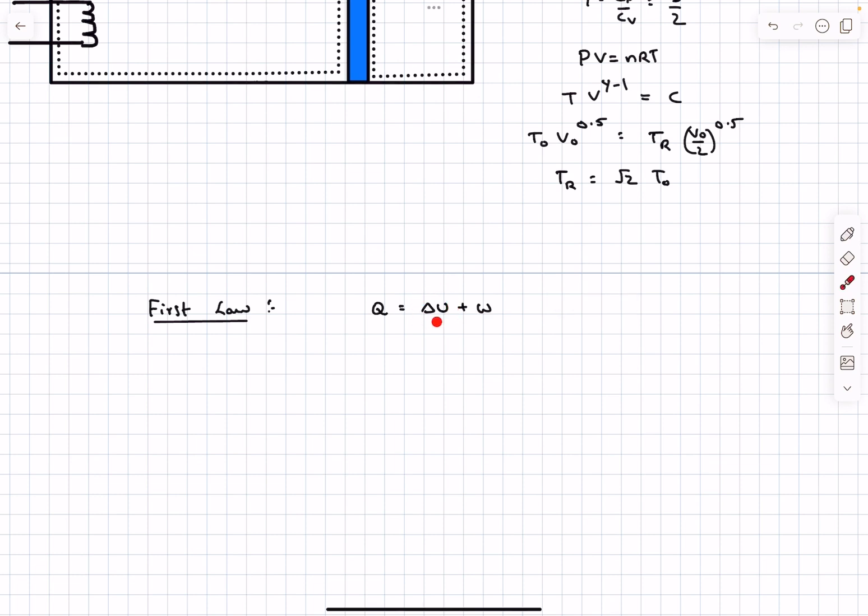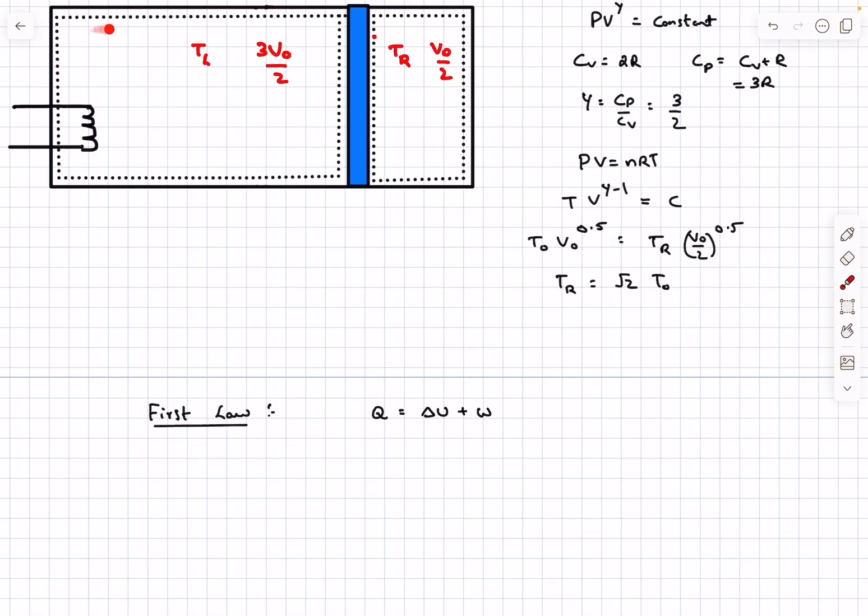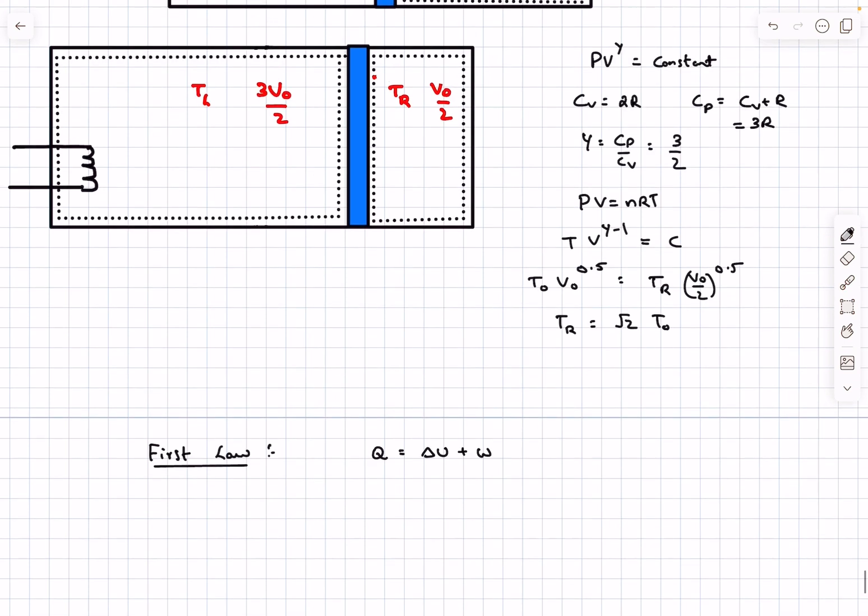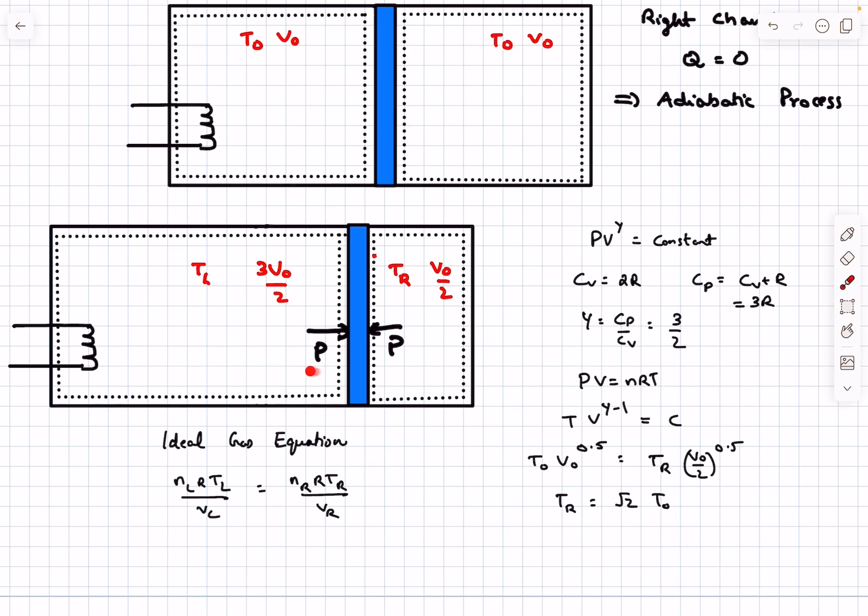To find ΔU we need the change in temperature of the left side. We don't really know the exact process happening on the left side, but we can use the ideal gas equation. We know that the moving piston is in equilibrium, so the forces have to be balanced, which means the pressure from the left has to equal the pressure from the right.